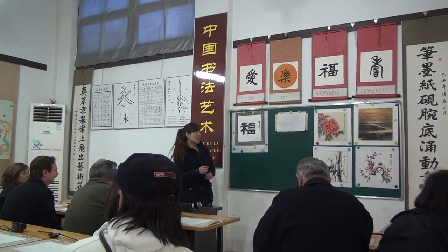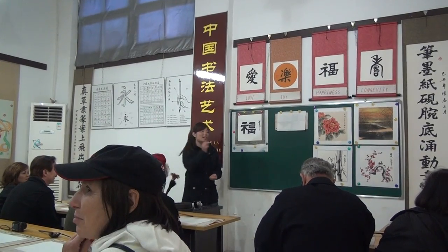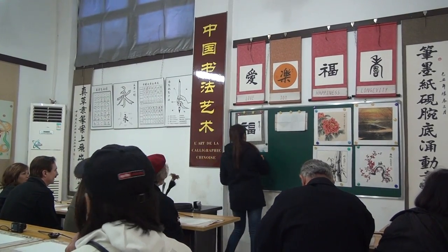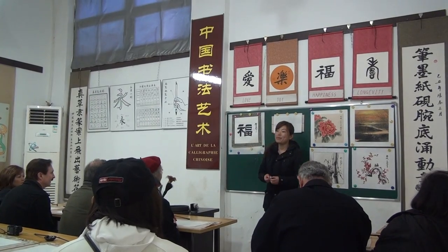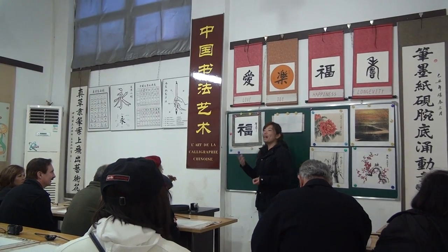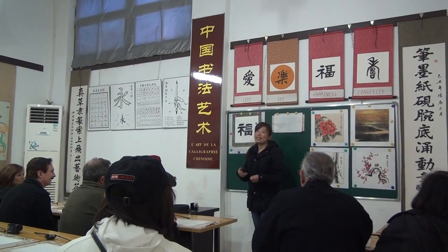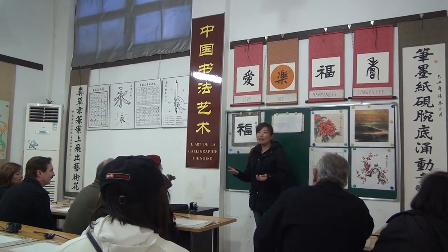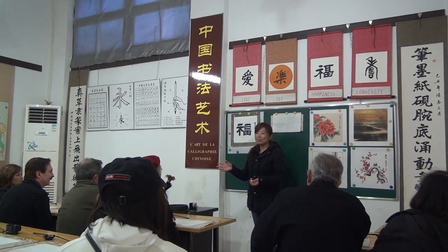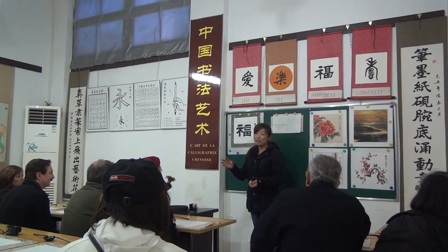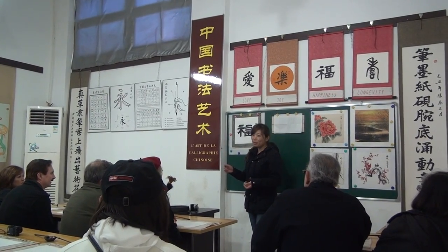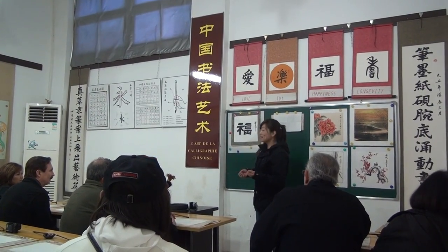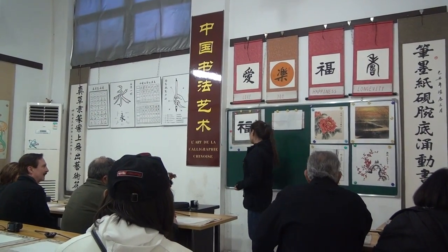Ni hao ma means 'How are you.' When people say 'How are you?' you say 'heng hao.' Or if you feel so-so, in China we say 'ma ma hu hu.'